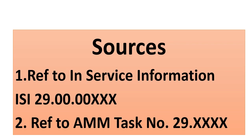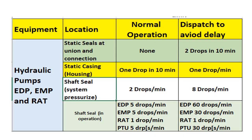Here is the equipment and the locations. This is for normal operation and during dispatch, to avoid delay. The equipment includes: hydraulic pumps — EDP, engine driven pump; EMB, electric motor pump; and the RAT, ram air turbine, which is located under the wing when extended.